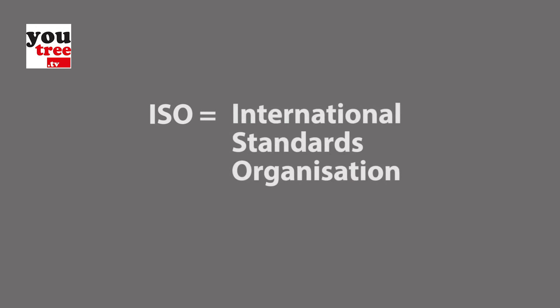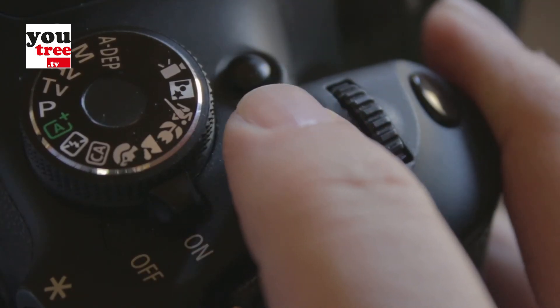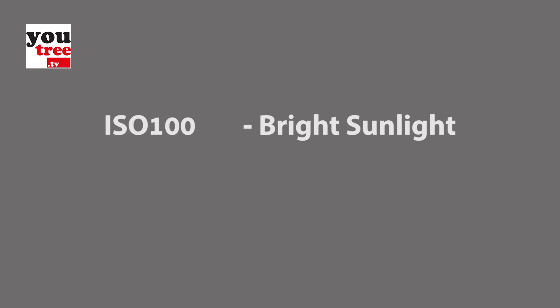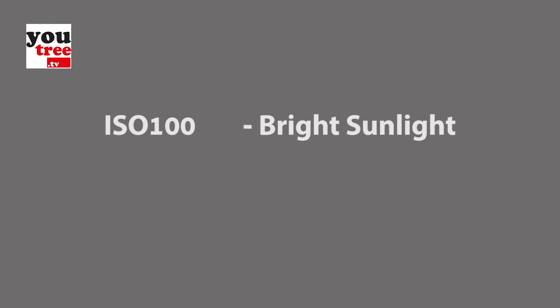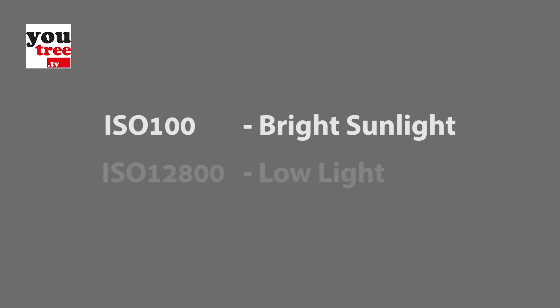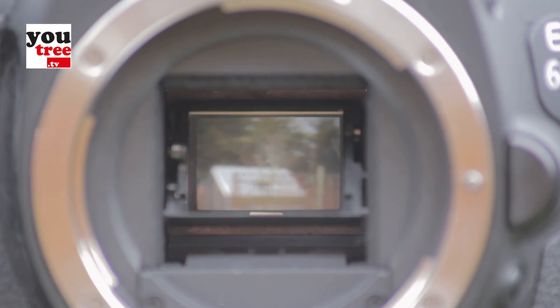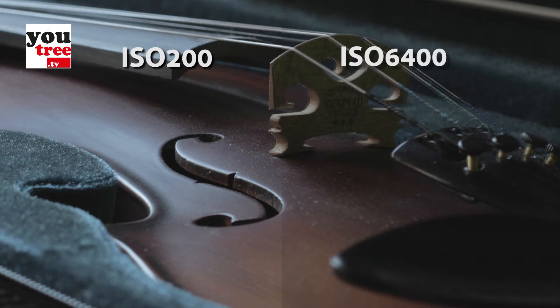Alternatively, I could look at the sensitivity of the sensor and check the ISO. ISO stands for the International Standards Organization, who set the film speed settings on old film cameras. Digital cameras use the same settings, but this time for changing the sensitivity of the sensor. An ISO 100 setting is used for bright sunlight and powerful studio lights, while ISO 12800 is used for low light situations. However, by increasing the sensitivity of the sensor, the image becomes more grainy, with electronic noise interfering with the image signal. The saying goes: more gain, more grain.